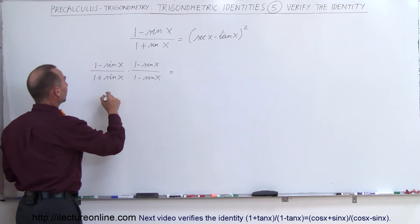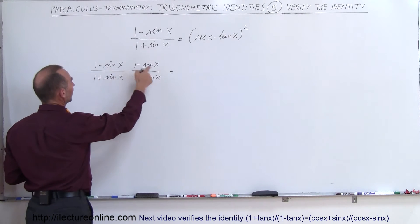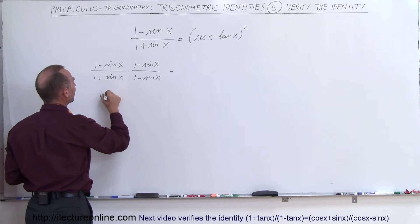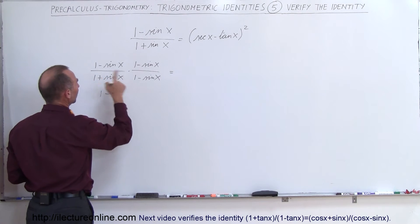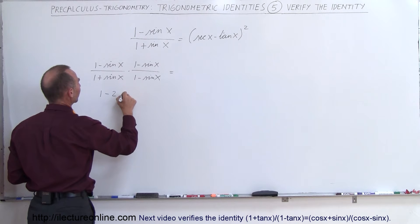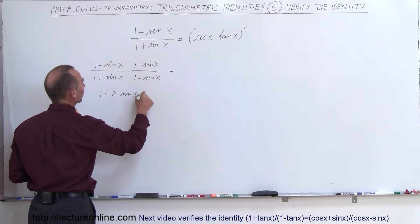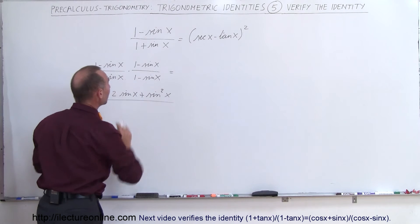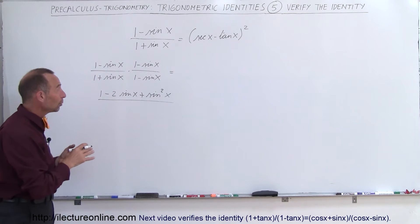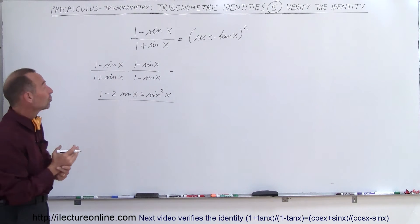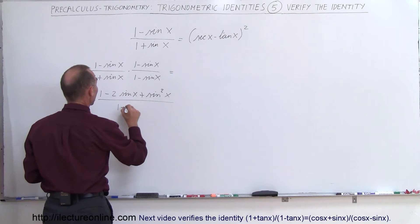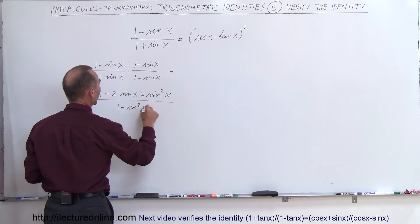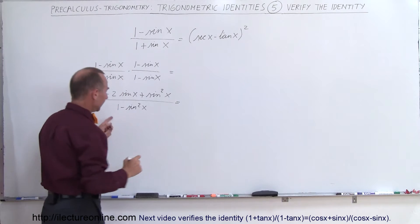When we do that in the numerator, we have, when we multiply this out, we get 1 minus 2 times the product of those two, which is 2 times the sine of x plus the sine squared of x. And if we multiply the denominator, notice that when you multiply a binomial with its conjugate, the middle term drops out, so we end up with 1 minus the sine square of x.